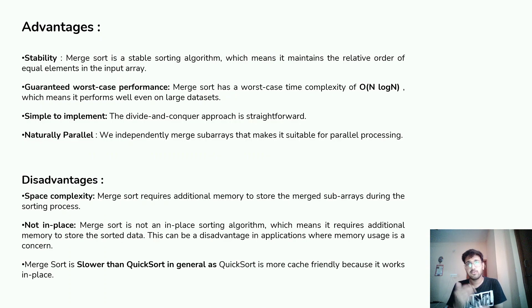We also have a few advantages and disadvantages of merge sort. Stability: merge sort is a stable algorithm which means it maintains the relative order of equal elements in the input array. Guaranteed worst case performance: unlike quicksort which has O(n squared), here we have a declaration that the sorting cannot go better than O(n log n) which helps in sorting large data sets. It is very simple to implement and we can also use merge sort for parallel processing.